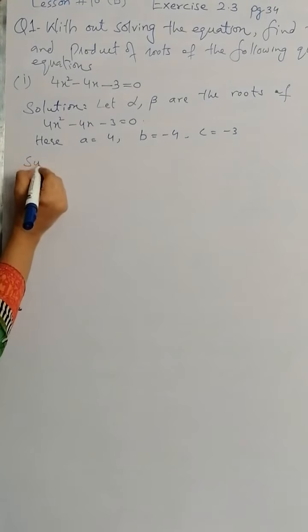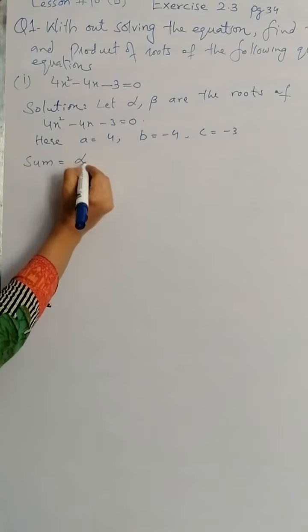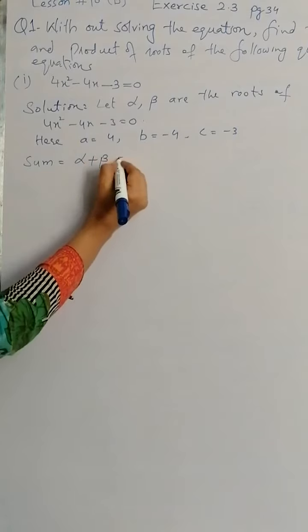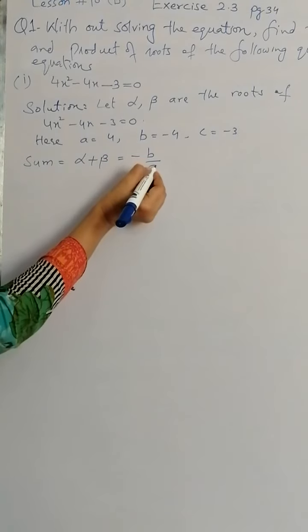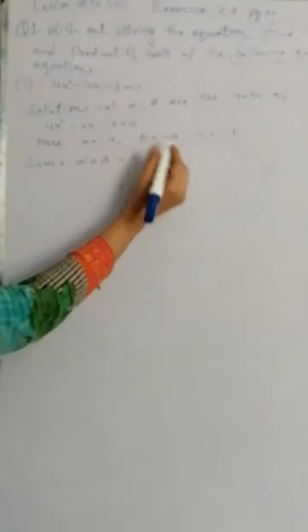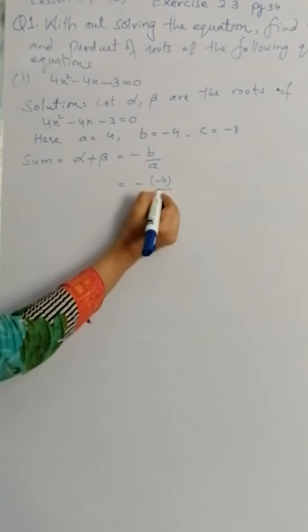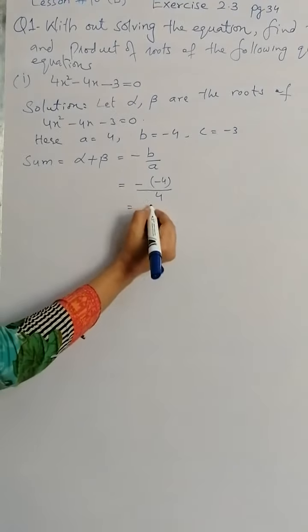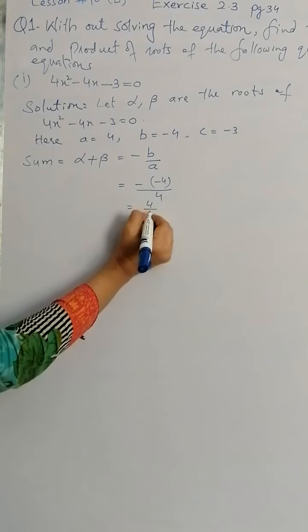For sum of roots, we use the formula alpha plus beta equals minus b by a. Minus and value of b is minus 4, while a is 4.